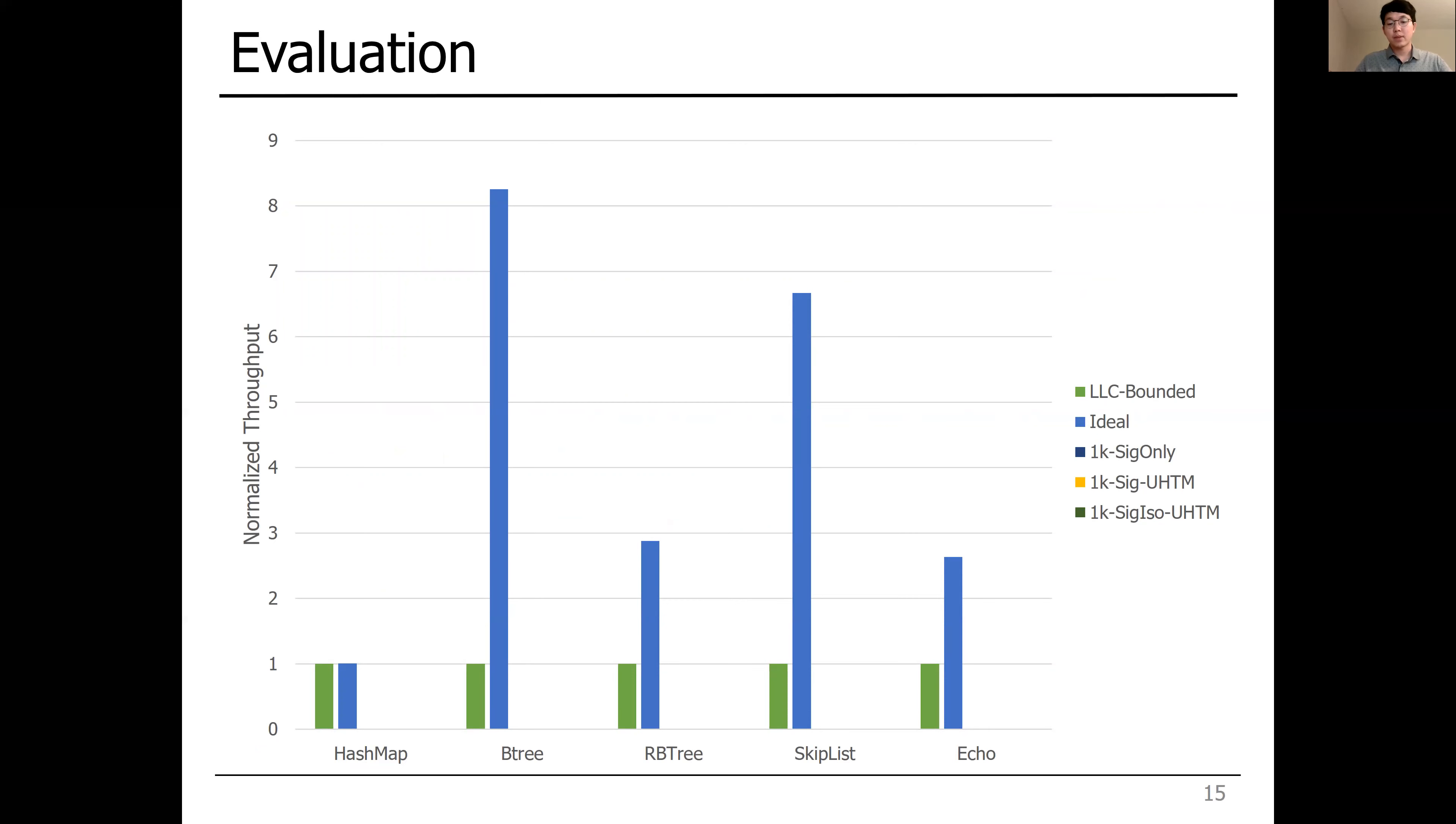This is the throughput of each design normalized to the LLC-bounded baseline. First of all, the ideal unbounded HTM outperforms the LLC-bounded one, which demonstrates the need for unboundedness.